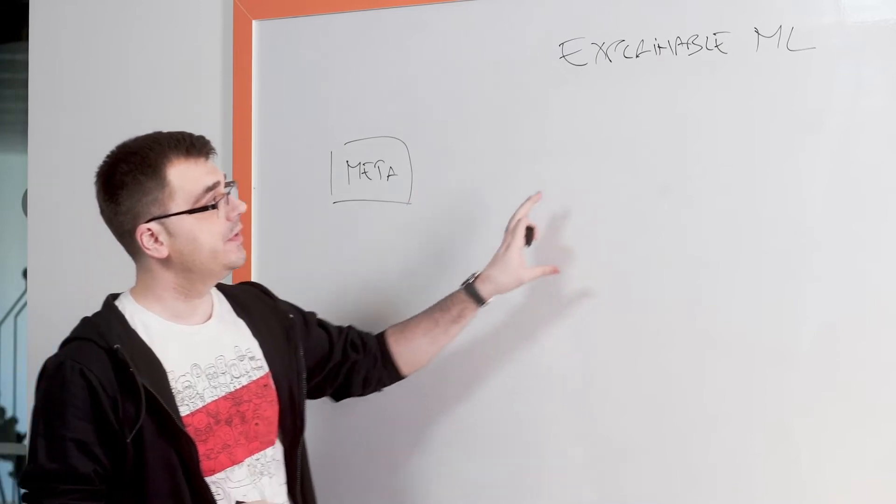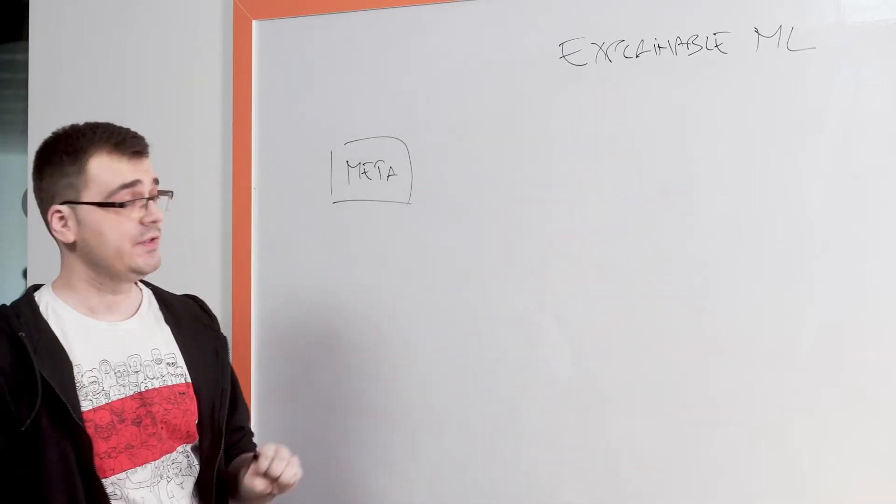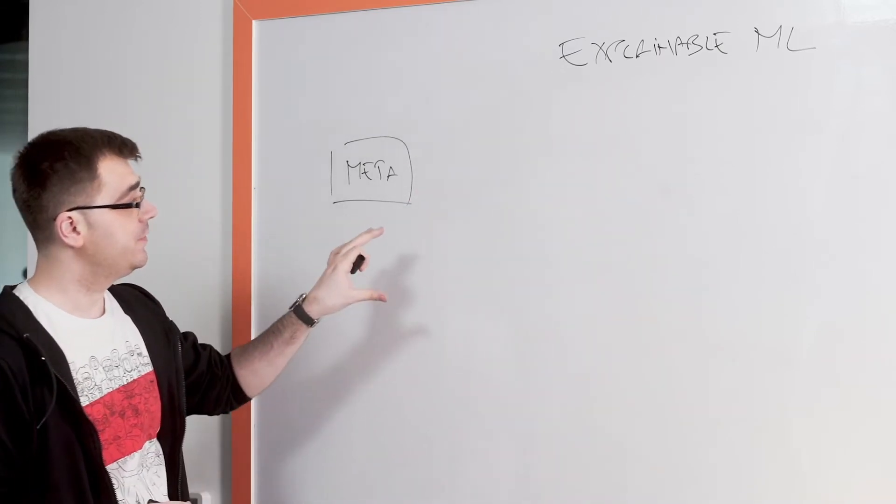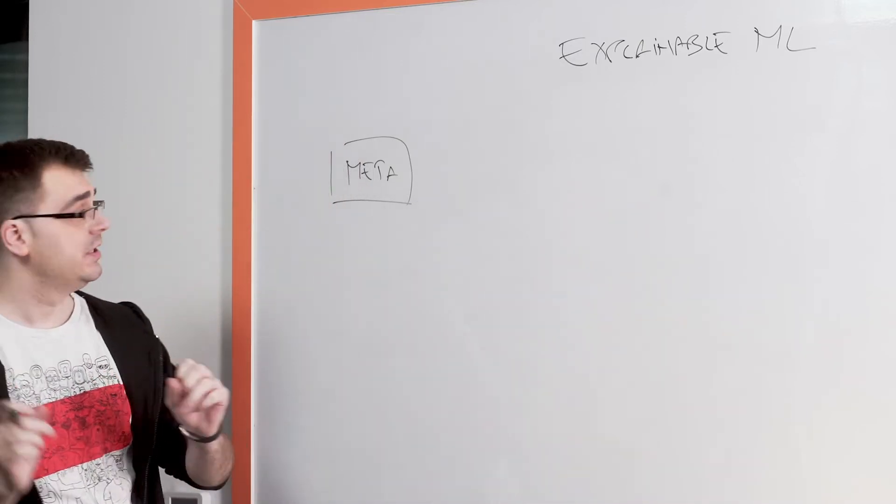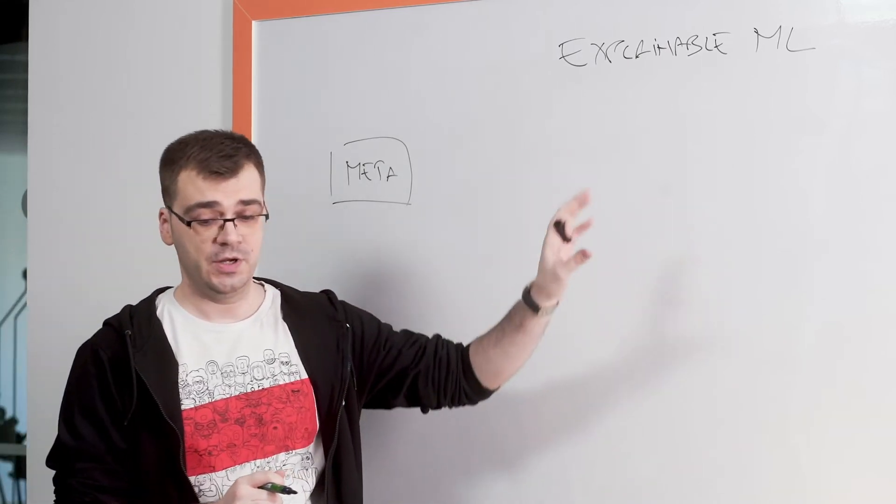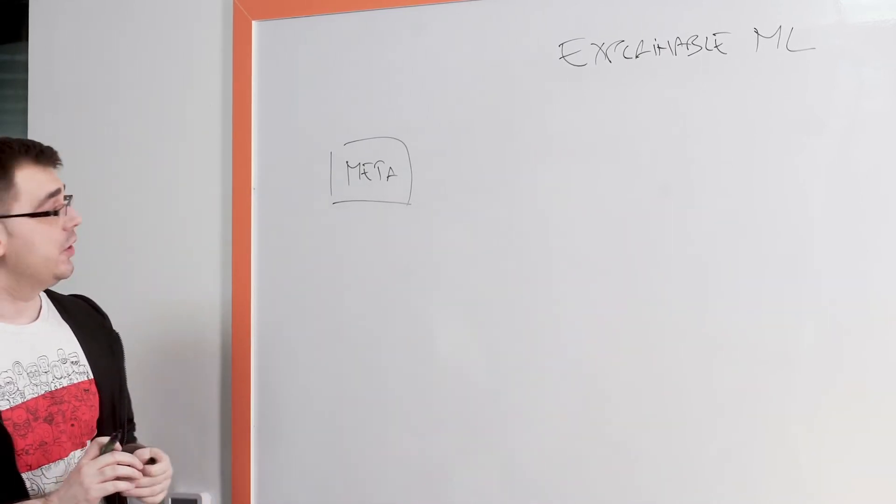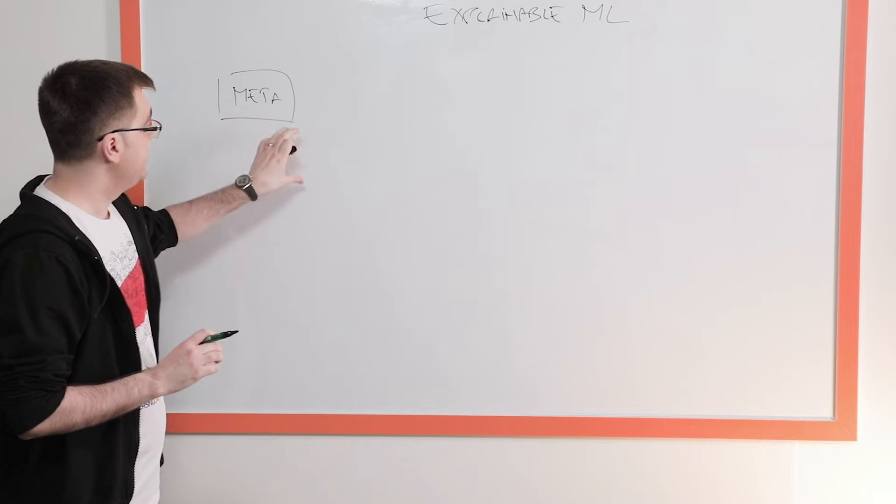And that metadata was transformed so the explainable machine learning engines could be trained. The way it was transformed, it was transformed from the raw metadata into the indicators. And we only use the human readable indicators to train our machine learning models.